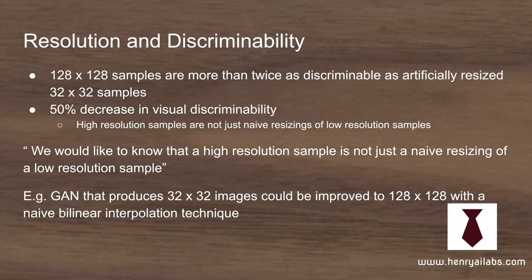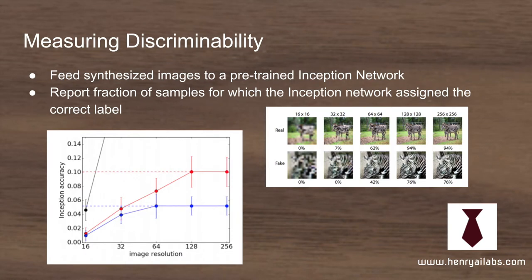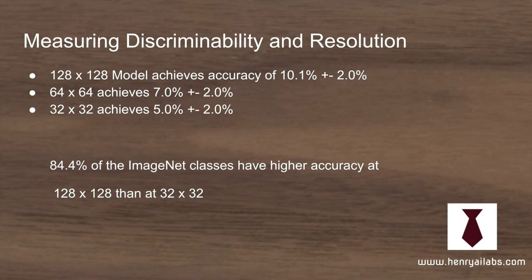They achieve 128x128 images with the ACGAN, but they want to make sure this isn't just naive upsampling — like generating 32x32 images with a GAN and then doing nearest neighbor interpolation to call it 128x128. So they test the discriminability of high resolution versus low resolution samples to guarantee they are actually adding information at higher resolution. They downsample images and feed them to a pre-trained Inception network trained on ImageNet to see what classification accuracy it achieves at different resolutions.